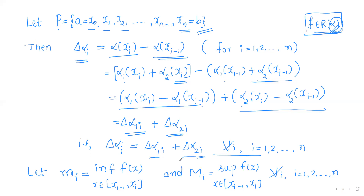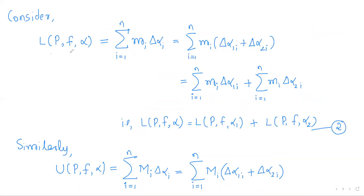Where α₁ and α₂ are monotonically increasing functions on [a, b]. Now we define the infimum and supremum of f(x) on each sub-interval [xᵢ₋₁, xᵢ]. Let mᵢ be the infimum of f(x) and Mᵢ be the supremum of f(x) as x varies over [xᵢ₋₁, xᵢ]. The lower Riemann-Stieltjes sum of f with respect to partition P and α is defined as Σ mᵢ · Δαᵢ.